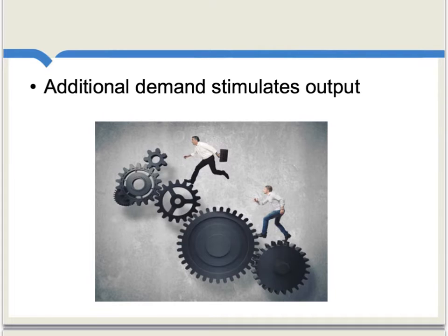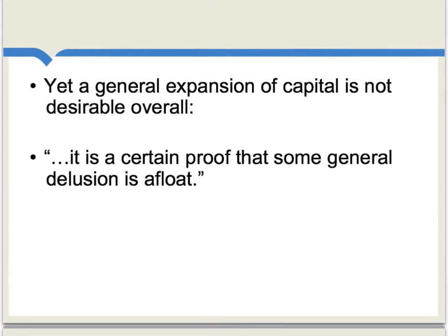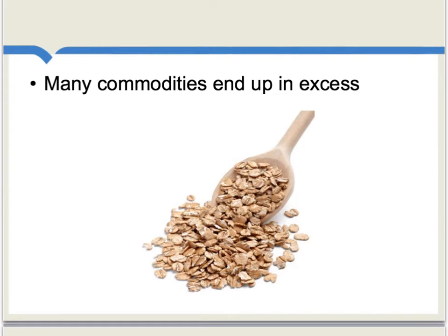Mill states quite clearly and coherently that additional demand stimulates output. There is some idle capital in production processes, and if more demand is forthcoming, suppliers are happy to produce more at a profit. Mill offers a very early statement of what later became aggregate demand macroeconomics. However, Mill's account deviates from Keynes in key regards. After explaining all of this, Mill states that a general expansion of capital motivated by an increase in demand is not, in general, desirable, noting it is 'a certain proof that some general delusion is afloat.' Mill fears a general overexpansion of production — a general glut — anticipating Hayek's business cycle theory and Robert Lucas's 1970s models, where suppliers are tricked by inflation into producing too much.